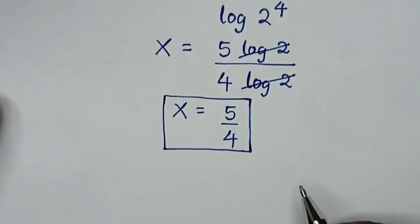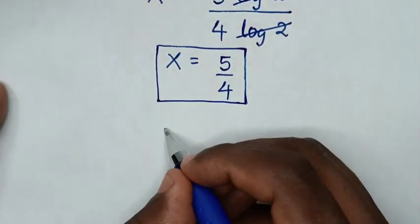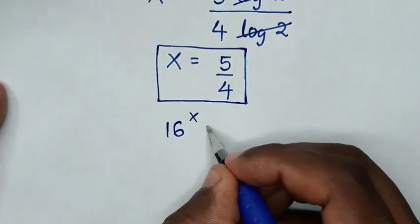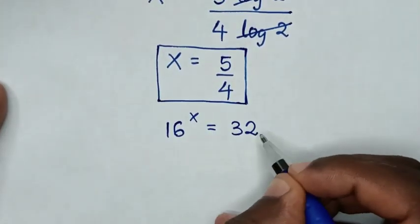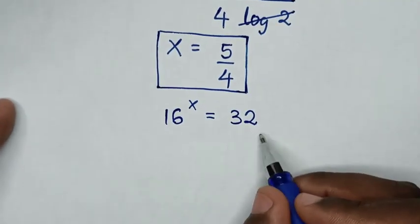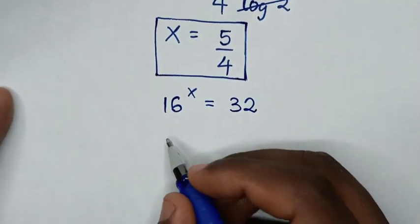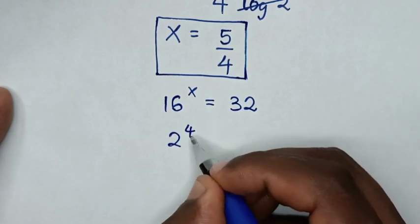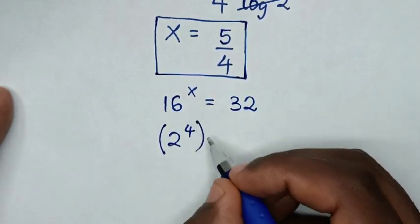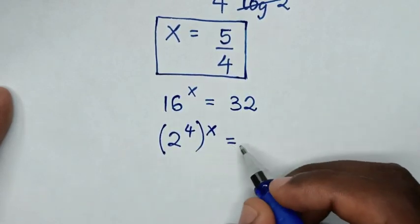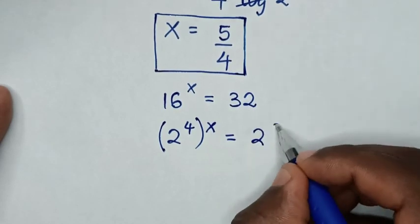Or, to solve in another method, from our problem which is 16 power x is equal to 32, we will apply exponential rule in this equation. Then 16 is same as 2 power of 4, bracket, power of x is equal to 32, which is same as 2 power of 5.